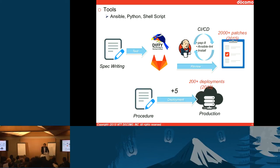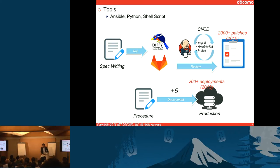These are the tools we are using. Most of the tools for deployment and operation are Ansible and Python, and some tools are written in shell script. This is our CI-CD environment — not much different from the community. But using this CI-CD environment, we've already created more than 2,000 patches in 2015, and we are deploying more than 200 patches to the actual production environment.